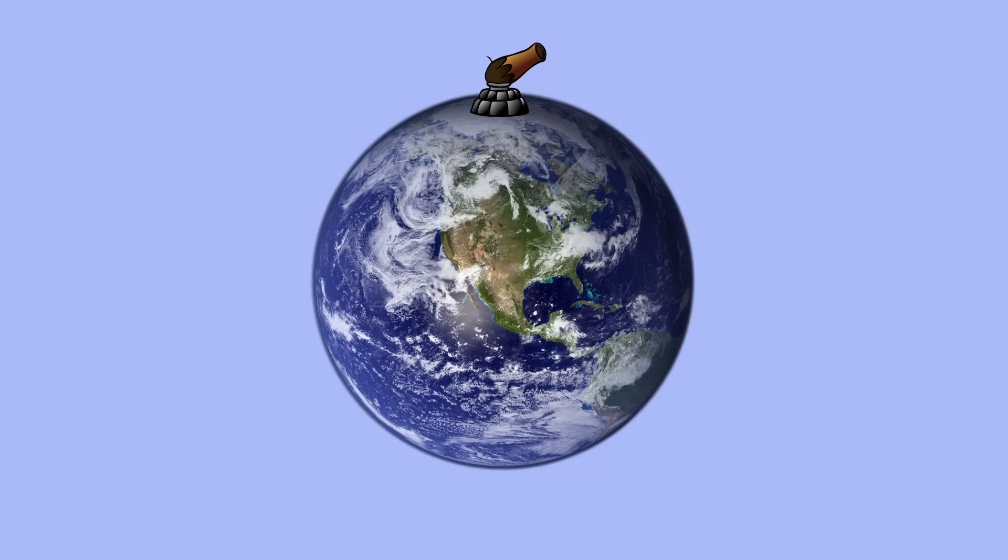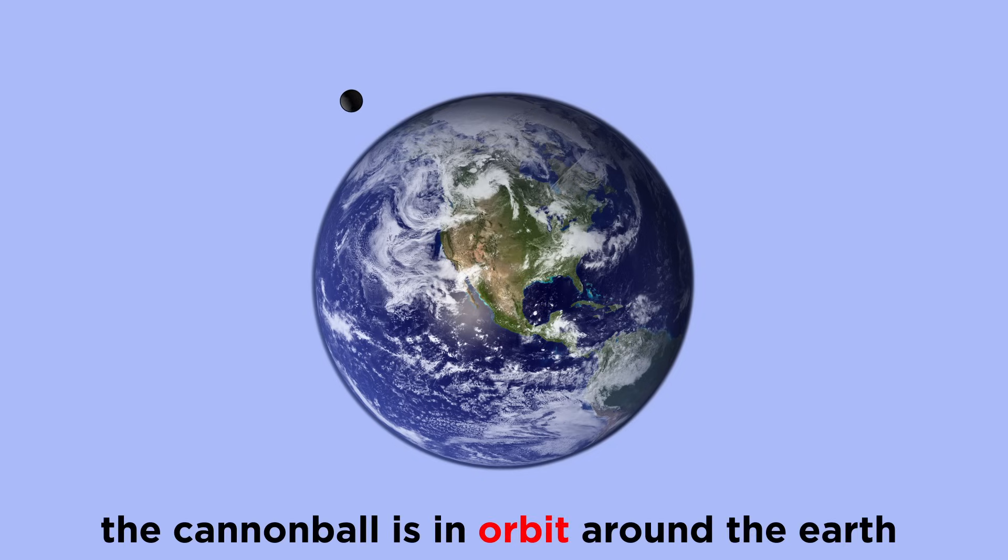If a cannonball could be fired with an incredibly immense force, it could produce a speed so great that the ball would never hit the ground, since it would fall at the same rate that Earth's curvature is produced. It would thus always be falling towards the Earth but never hitting it. Such an object would be said to be in orbit around the Earth.